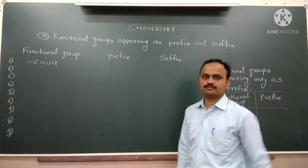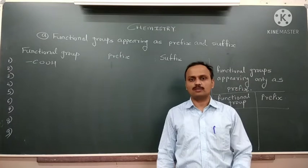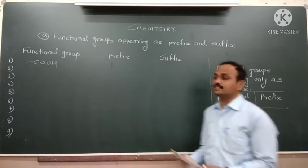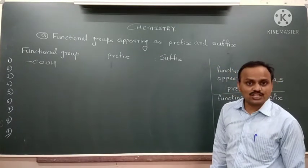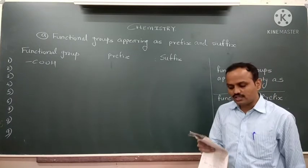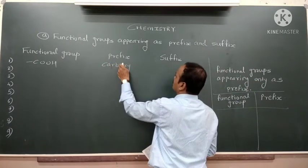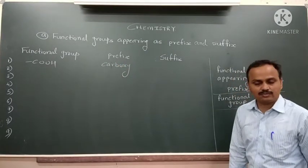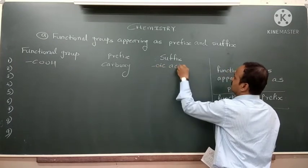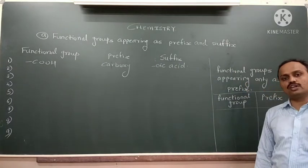The first is –COOH. We can easily identify this as the carboxylic acid functional group. When carboxylic acid comes as a substituent, meaning when we write it as a prefix word, the word used is 'carboxy'. When it acts as a parent functional group, it is written as the suffix '-oic acid', for example, ethanoic acid, propanoic acid, etc.